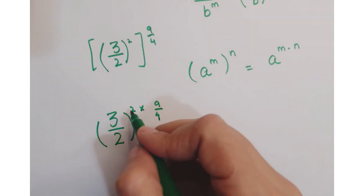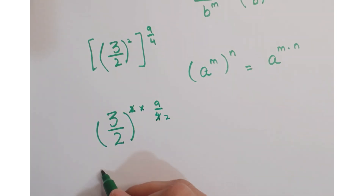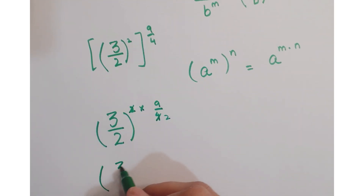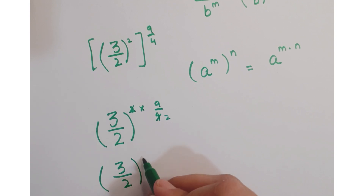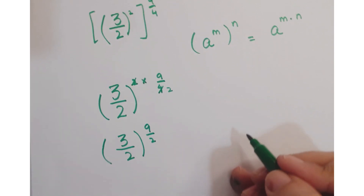Now this 2 and this 4 get cancelled, and you are left with 3 upon 2 whole to the power 9 upon 2.